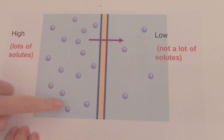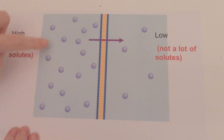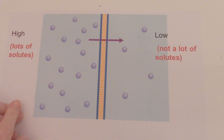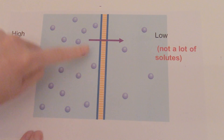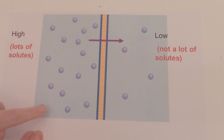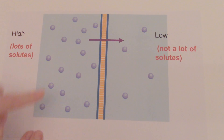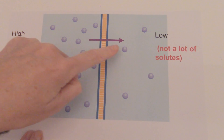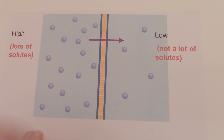Looking at all of these purple solutes — we can call solutes molecules — these are things that are moving across the membrane. This is an area of high concentration. The molecules want to move to an area of low concentration where there are not a lot of solutes.